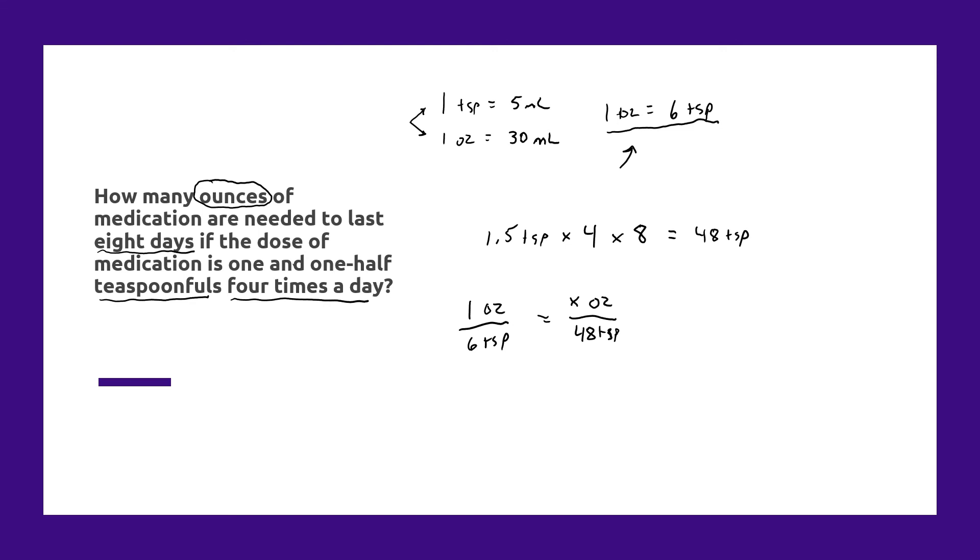And then to solve this using cross multiplication, you take one ounce divided by six, just like it's represented there on the left-hand side, and then you cross multiply that by 48 teaspoonfuls. And the answer then becomes one divided by six times 48, which is going to be eight ounces.